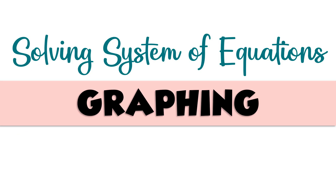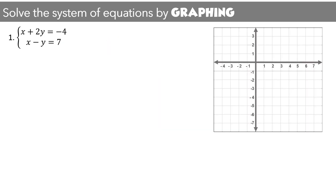Let us proceed in solving a system of linear equations by graphing. To graph two equations, we need to get the x-intercept and y-intercept of each. The x-intercept is the point where the line crosses the x-axis, and the y-intercept is the point where the line crosses the y-axis. To get the x-intercept, the value of y must be 0; for the y-intercept, x must equal 0.